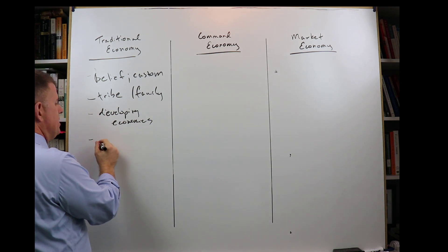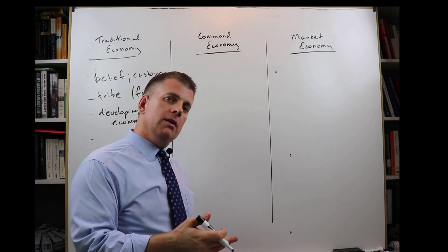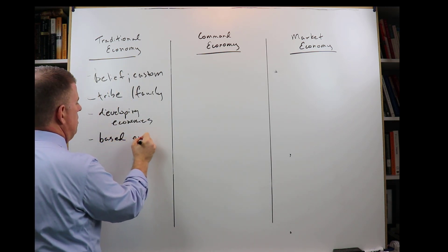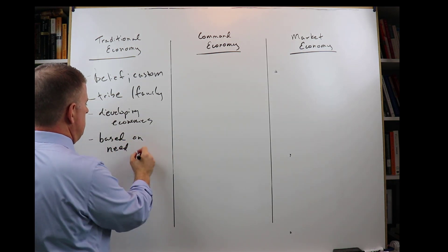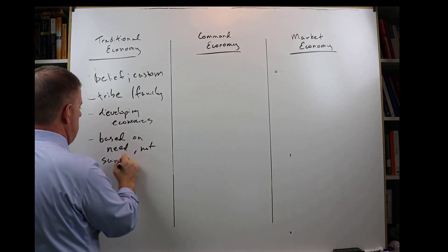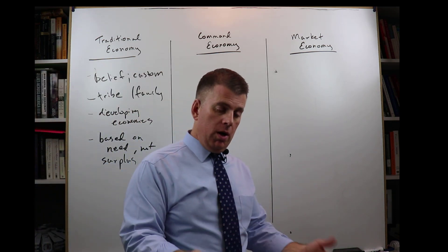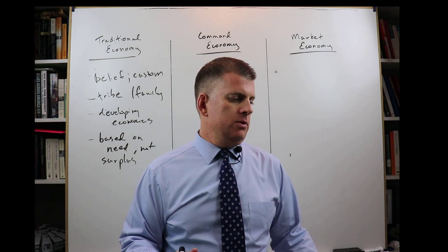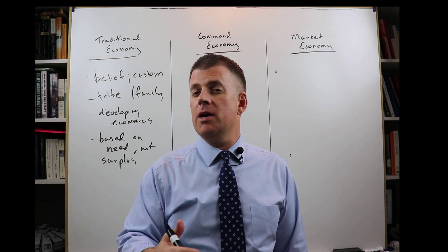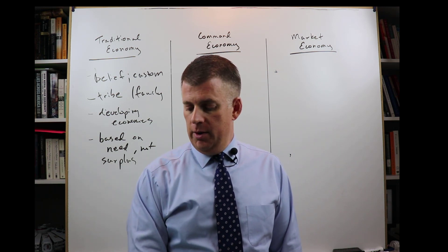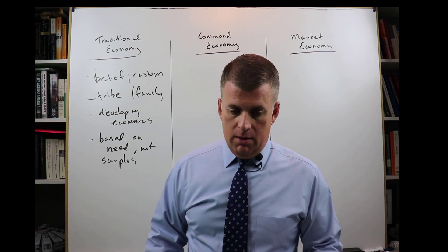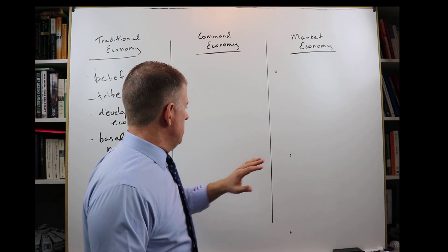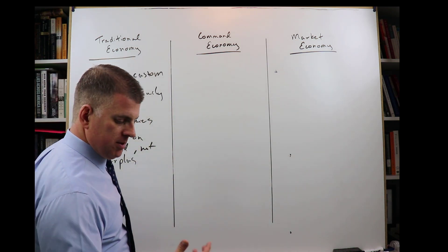It's based on need, on subsistence, not on surplus. Surplus means making more than we need. So if we're making baskets or some kind of a good, and we start making more than what we need, then we're getting closer to a market economy. But a traditional economy is really just based on subsistence.